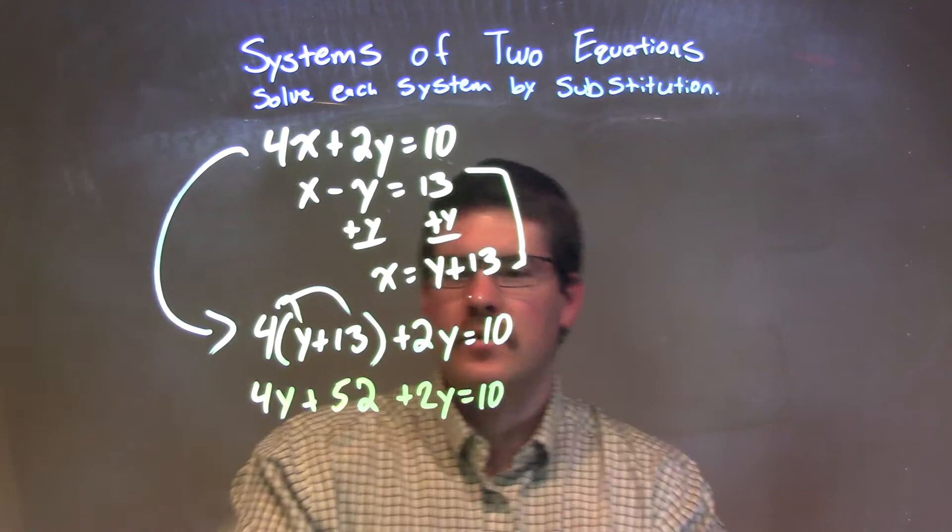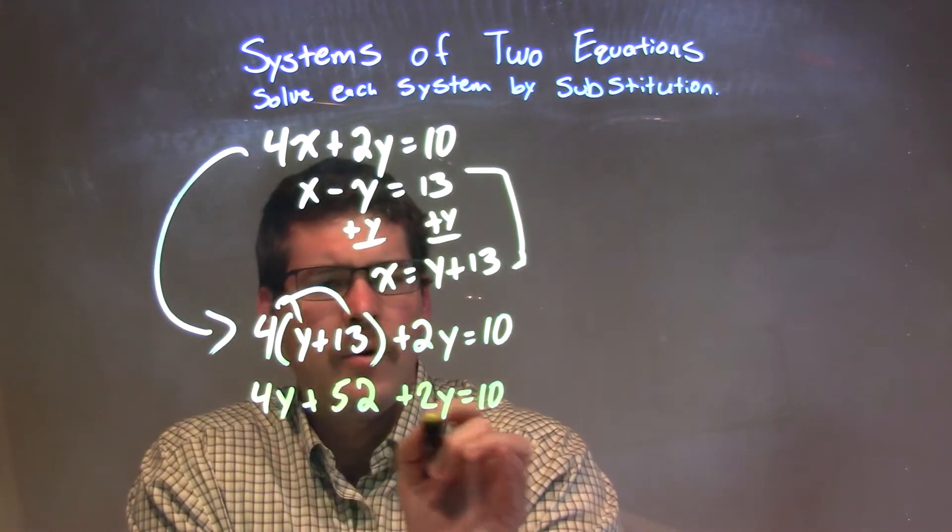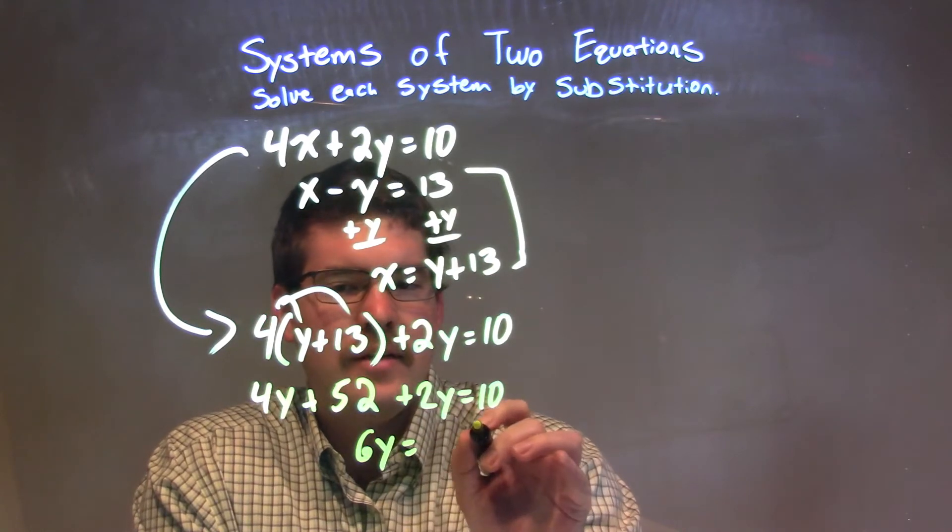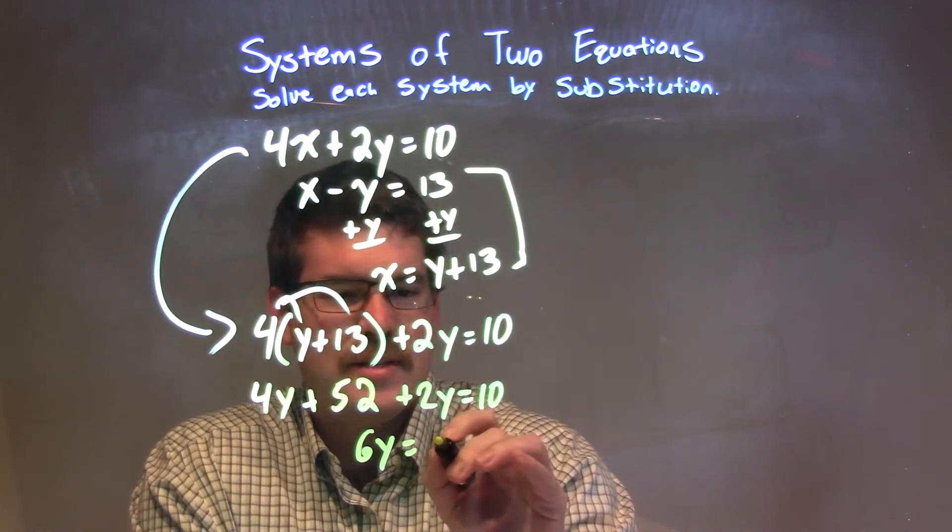All right, so let's subtract 52 from both sides. Combine the 4y and 2y. Well, 4y plus 2y is 6y. And when I subtract 52 from both sides, it's 10 minus 52, which is negative 42.